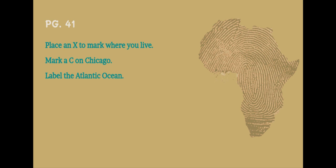Now turn back to page 41 in your student books. Sometimes maps help us understand a text. However, the author of Africa Digs did not include maps. The author assumed the reader knows where Niger, Africa is in comparison with the United States.